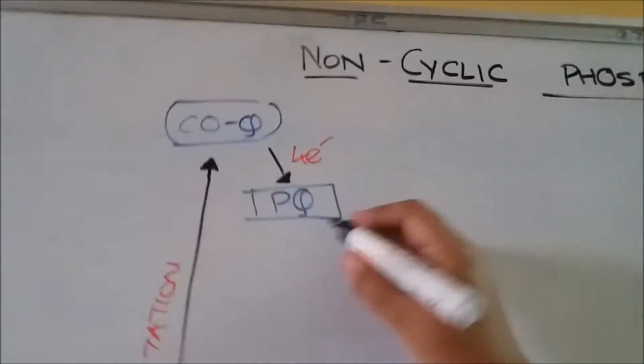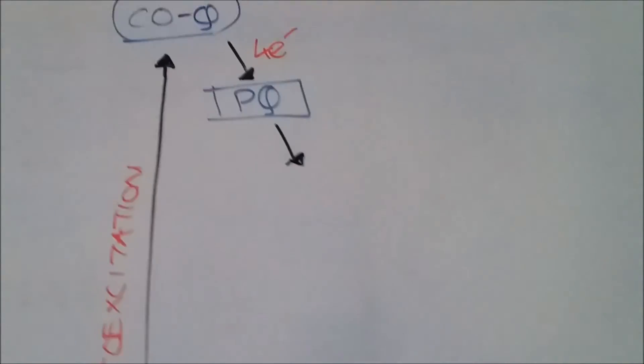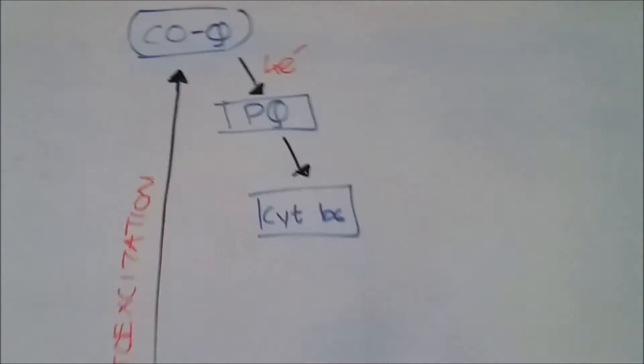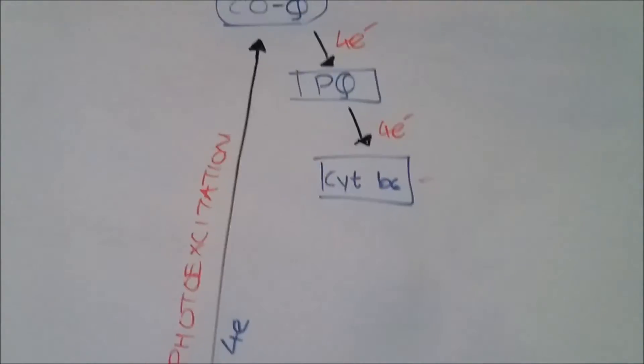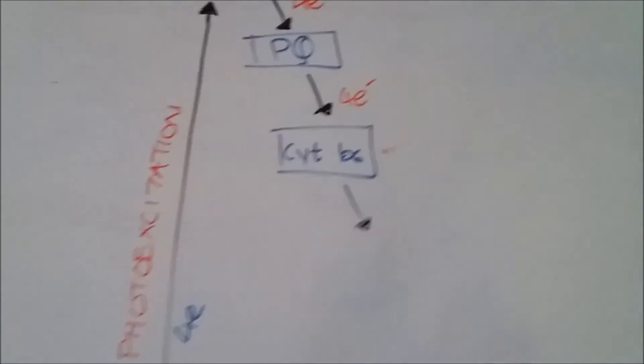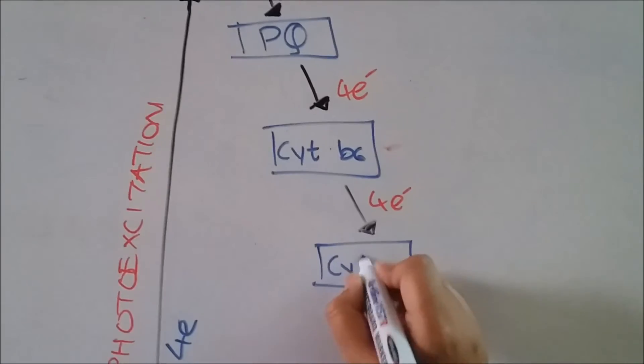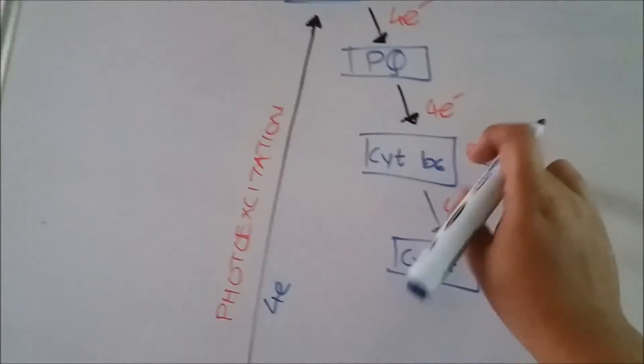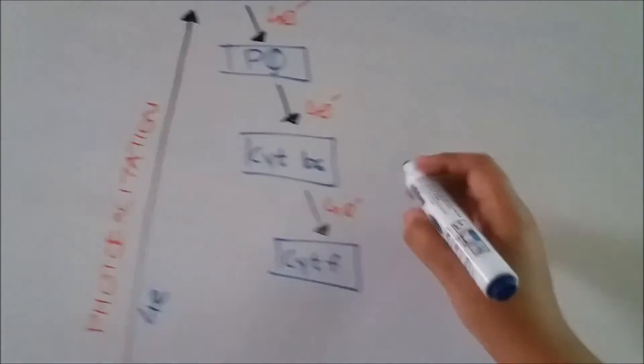Plastoquinone will transfer these electrons to cytochrome b6, and cytochrome b6 will transfer these electrons to cytochrome f. During this process of transfer of electrons from cytochrome b6 to cytochrome f, there will be generation of an ATP molecule.